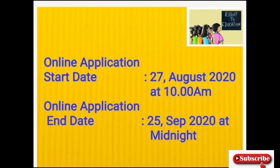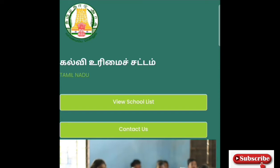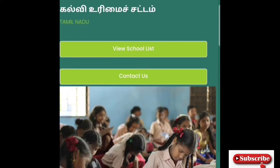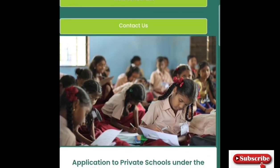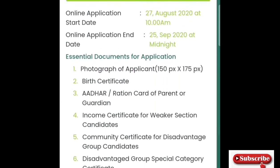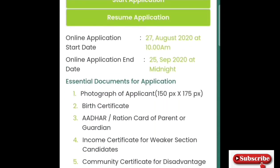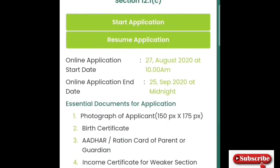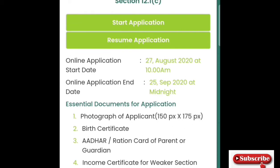If you want to apply, note the last date for application. On the home page, you can find options including: view school list, content, start application, and resume application. You can follow the instructions to start your application.